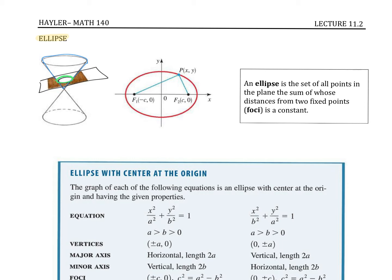An ellipse is the set of all points in the plane, the sum of whose distances from two fixed points — the foci — is a constant sum. If you imagine sticking two pegs in the ground, then getting a string and attaching it, and putting your finger in that string to form a tight angle between the two of them, then slowly working your way around with that piece of string, you'll end up drawing something called an ellipse.